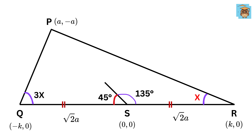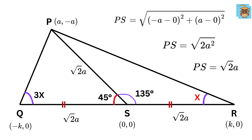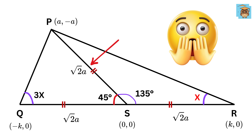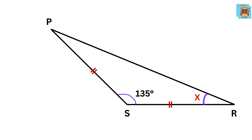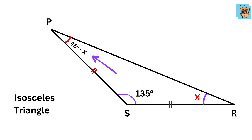We have reached the climax. Resurrect the line PS. The distance PS equals square root of (minus A minus 0) squared plus (A minus 0) squared, or square root of 2A squared, or root 2 times A. This means segment PS is also equal to both QS and RS. Finally, consider triangle PRS. This angle is X and this angle is 135 degrees. So angle RPS equals 180 minus 135 minus X, or 45 minus X. But side PS equals side RS, so triangle PRS is an isosceles triangle. Therefore, angle RPS equals angle PRS, meaning 45 minus X equals X. This gives 2X equals 45, or X equals 22.5 degrees.